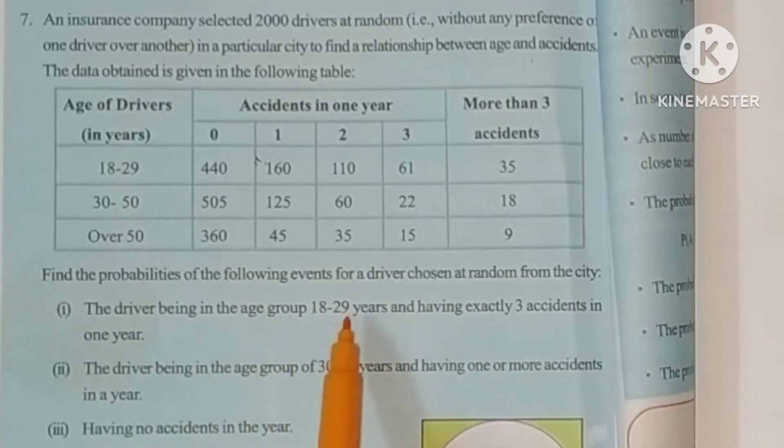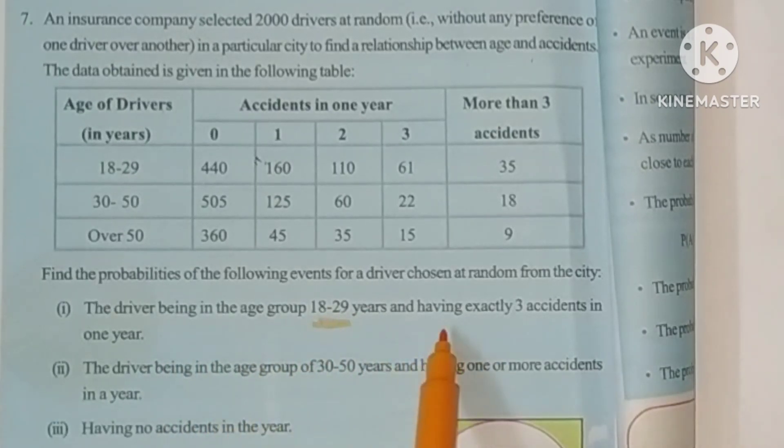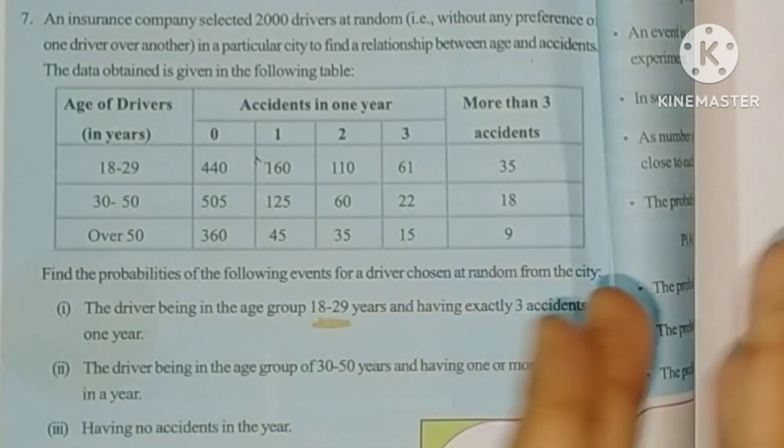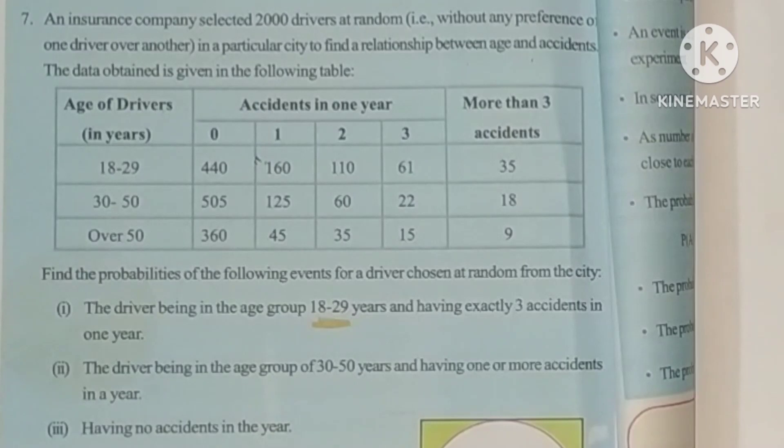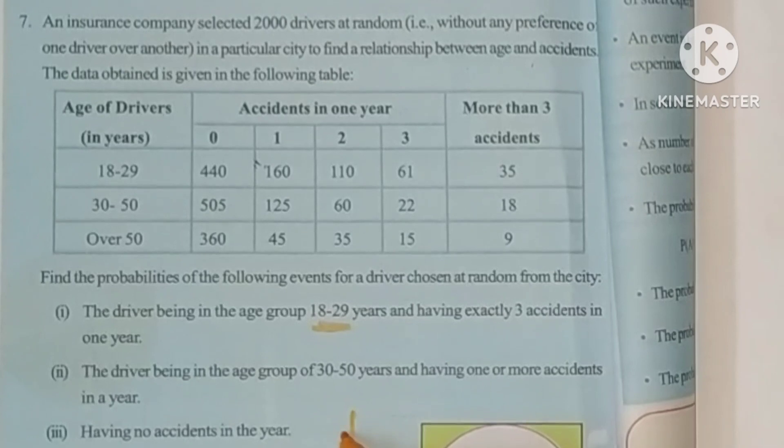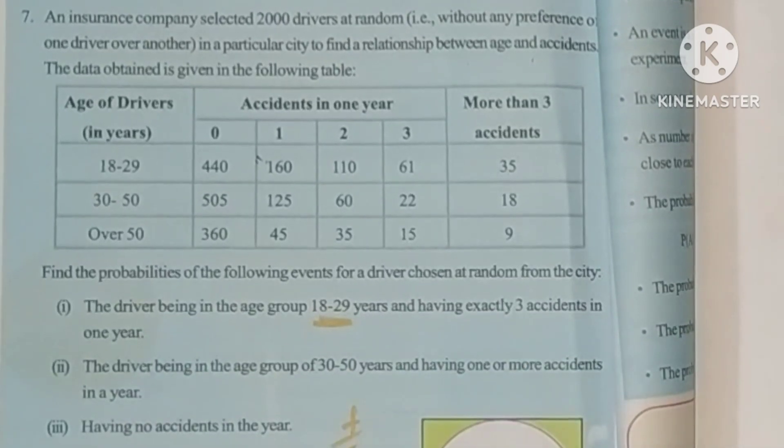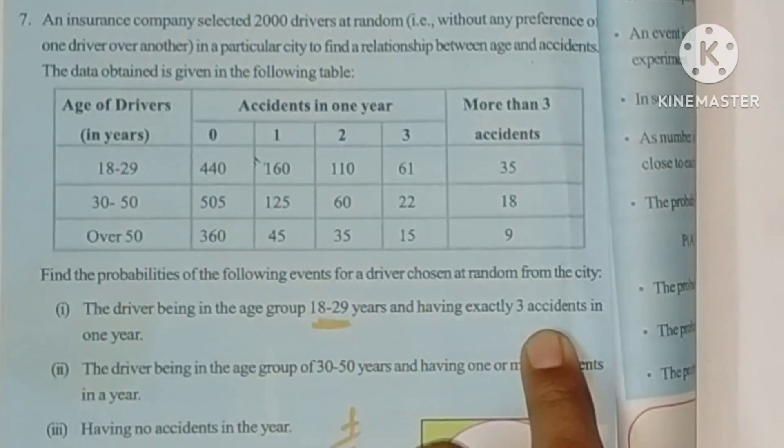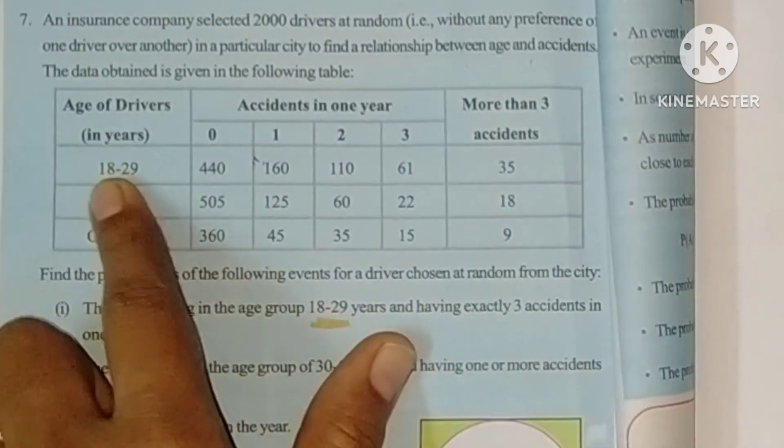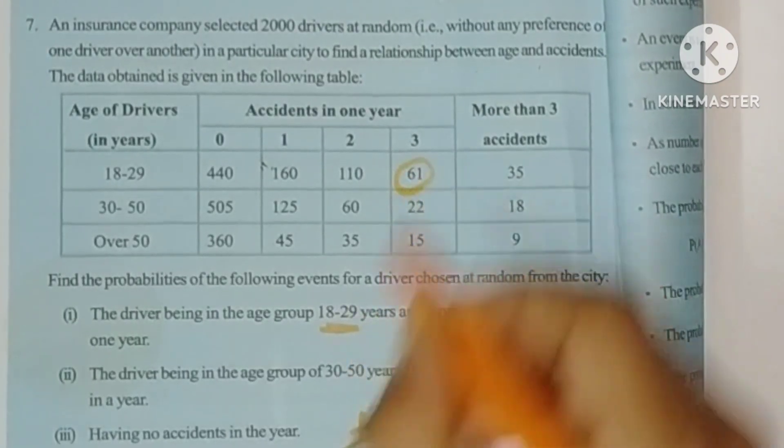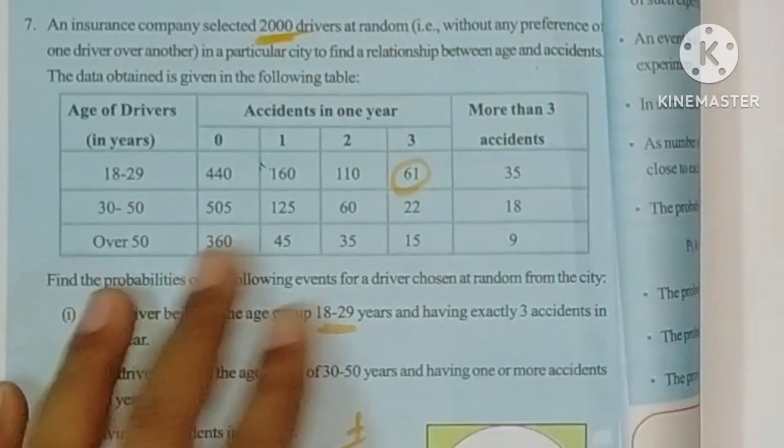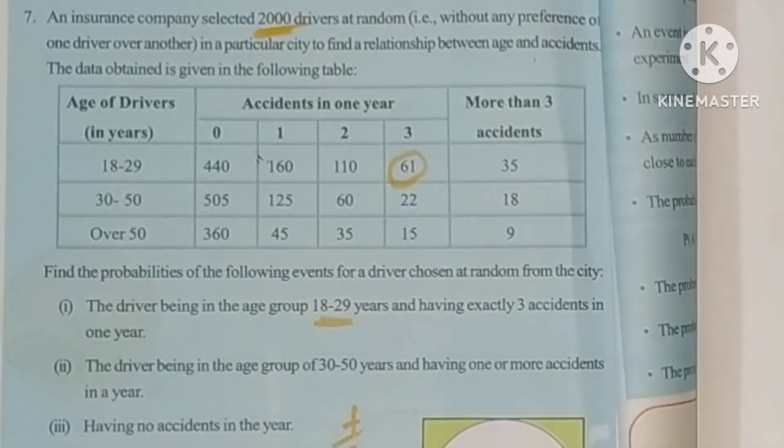First one: The driver being in the age group 18 to 29 years and having exactly three accidents in one year. So what is the formula for probability? Probability is favorable outcomes by total outcomes. Favorable: 18 to 29 years, exactly three accidents, that is 61. This is favorable outcomes. Total number of drivers is 2000, so that's total outcomes. So 61 by 2000. First question.